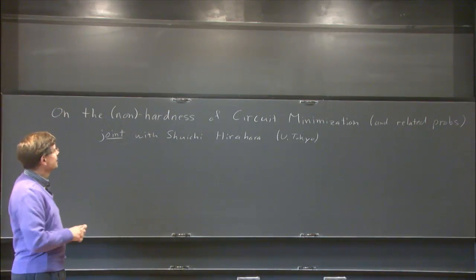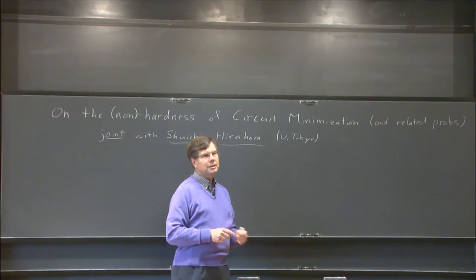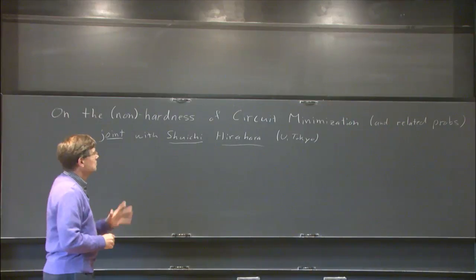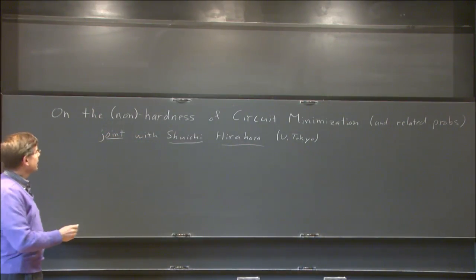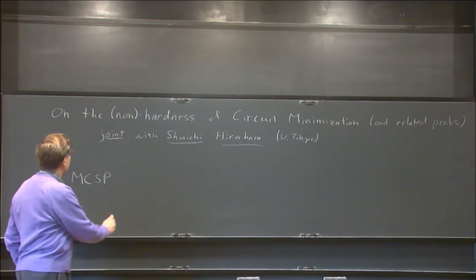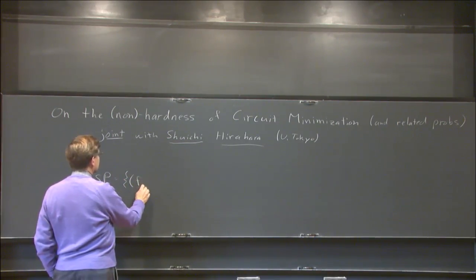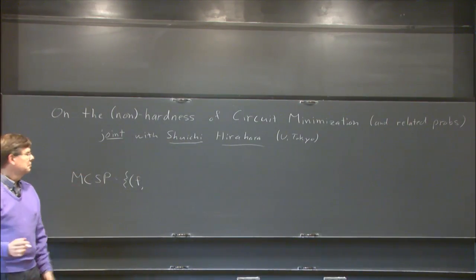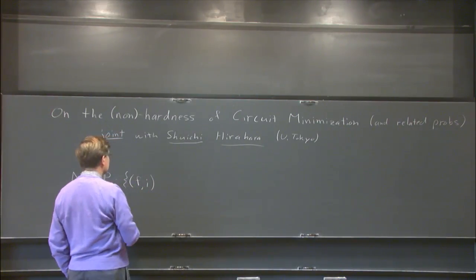It's not clear how hard the problem is. First let me mention Shuichi Hirahara, who is a PhD student in Tokyo, who is certainly central to all of this. We're really going to be talking about the minimum circuit size problem, which takes two inputs. One is a bit string F of length 2 to the M, which is just the truth table of a function, and you want to know how big the minimum circuit is for that function.